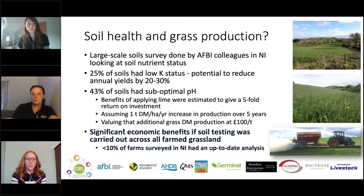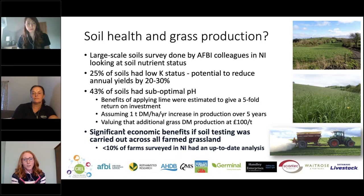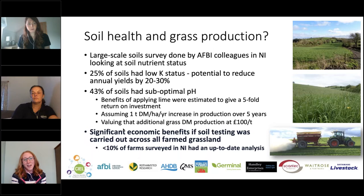Economic analysis found that the benefits of applying lime were estimated to give a five-fold return on investment if you correct suboptimal soil pH. The assumptions were that you'd boost dry matter production by a tonne per hectare per year over a five-year period simply by correcting soil pH, valuing that additional production at £100 per tonne. There are clearly significant economic benefits from soil testing — but only 10% of the farms surveyed actually had an up-to-date soil analysis. I'm hoping these figures highlight the importance of monitoring soil nutrient status as the foundation to improving and maintaining grassland production.